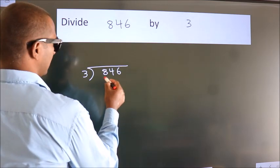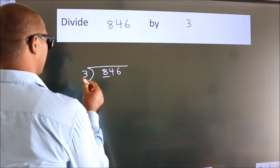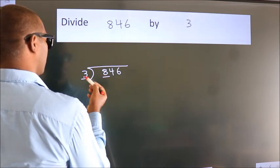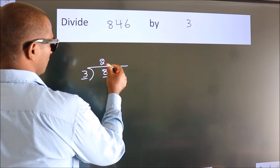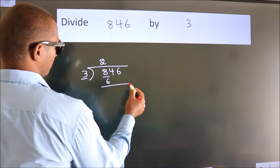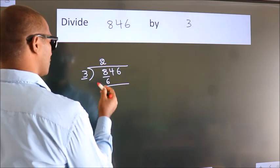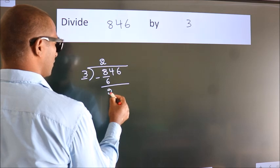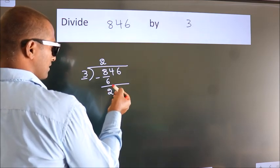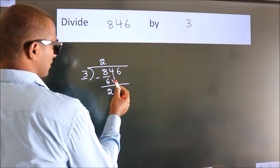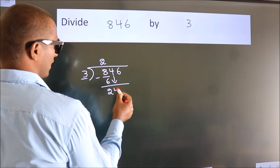Here we have 8, here 3. A number close to 8 in the 3 times table is 3 twos, which is 6. Now we subtract and we get 2. After this, bring down the beside number — so 4 comes down.